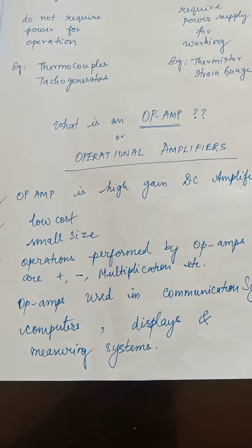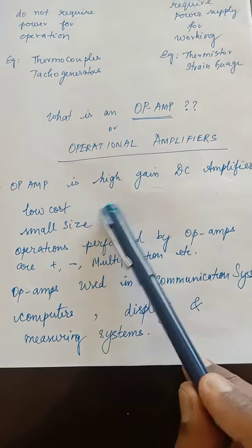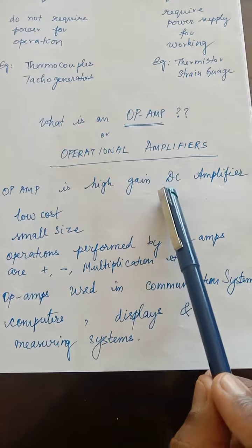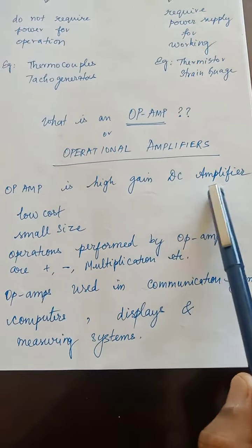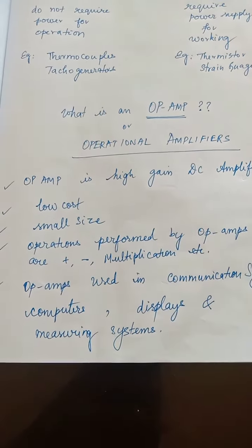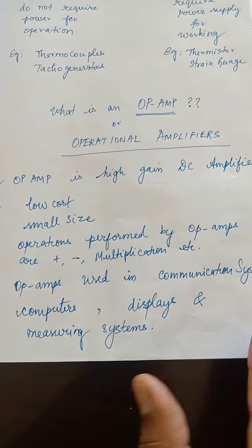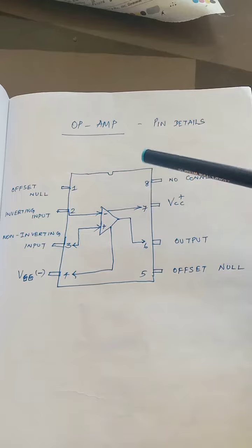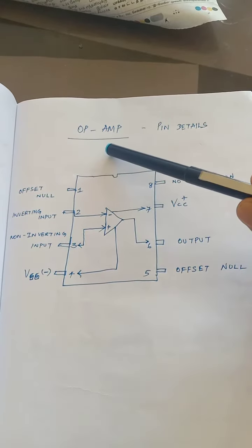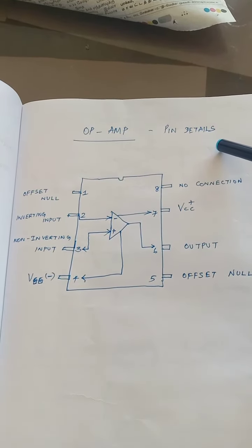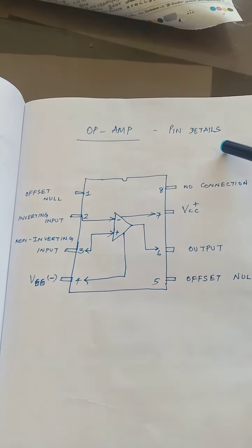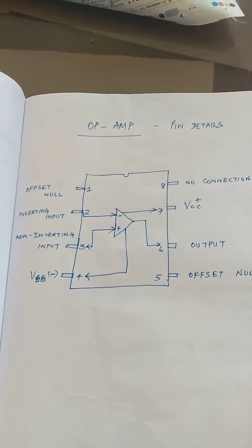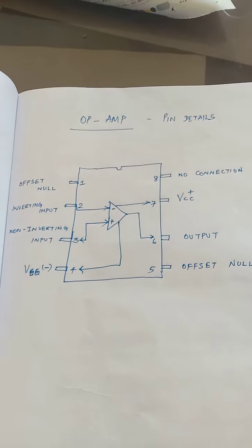An op-amp is nothing but an operational amplifier. Now let's look at the pin details of the op-amp — the 741 IC. This is the pin-out diagram.